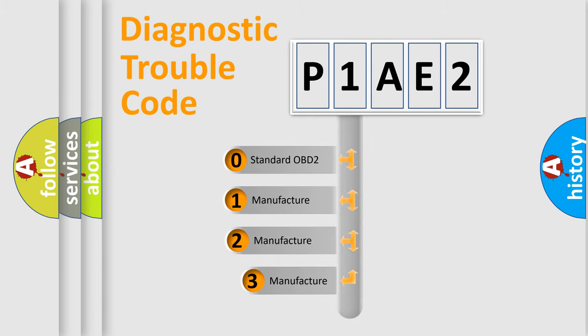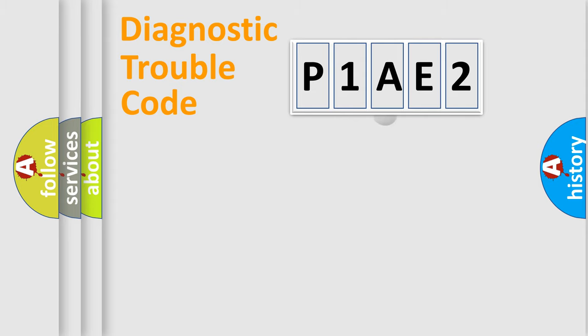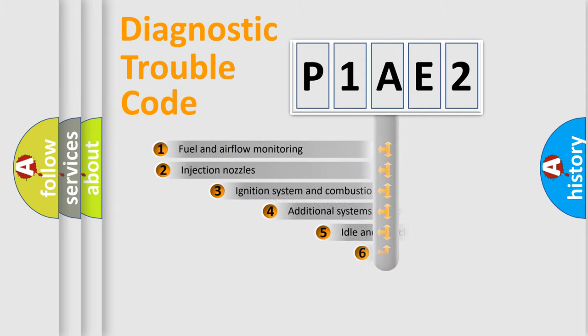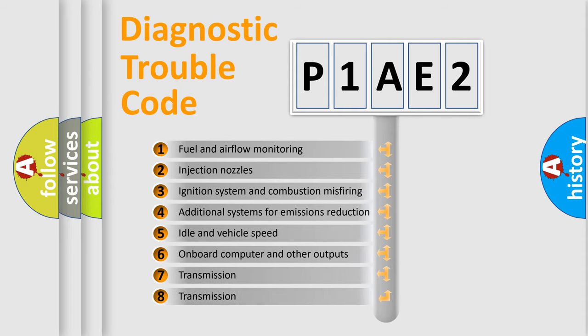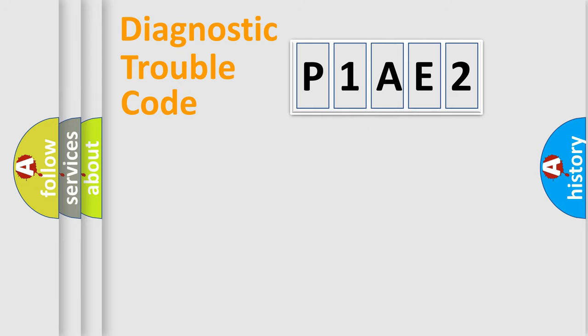If the second character is expressed as zero, it is a standardized error. In the case of numbers 1, 2, or 3, it is a more precise expression of the car-specific error. The third character specifies a subset of errors. The distribution shown is valid only for the standardized DTC code. Only the last two characters define the specific fault of the group.